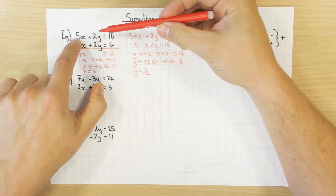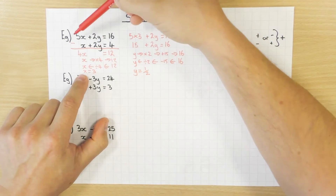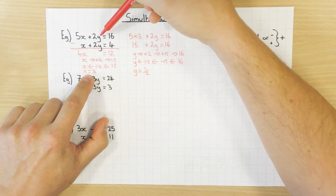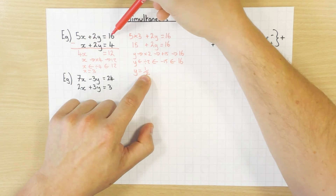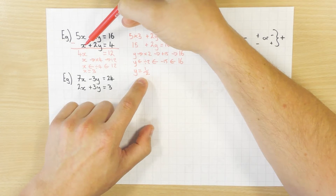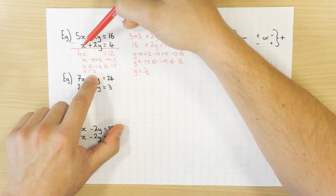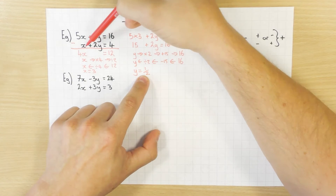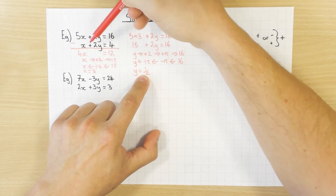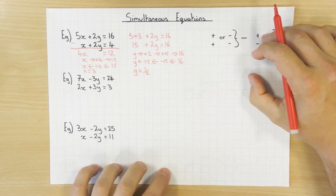Let's check the answer. 5 times 3 is 15, 2 times a half is 1, and 15 plus 1 is 16 — that works. Now check the other equation: x is 3, that's just 3; 2 times a half is 1; 3 add 1 is 4. Both x and y values should work in both equations — that's how you verify.